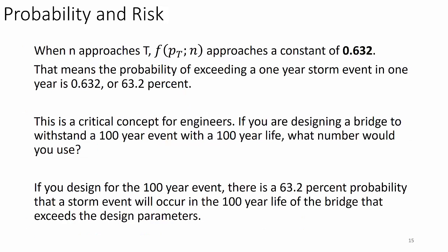When N approaches T, f(P_T, N) approaches a constant of 0.632. This means the probability of exceeding a 100-year storm event in 100 years is 63%. This is a critical concept for engineers. If you're designing a bridge to withstand a 100-year event with a 100-year design life, you'd better not use the 100-year event as your design criterion — you have a 63% chance it will be exceeded. Those aren't good odds for an engineer.